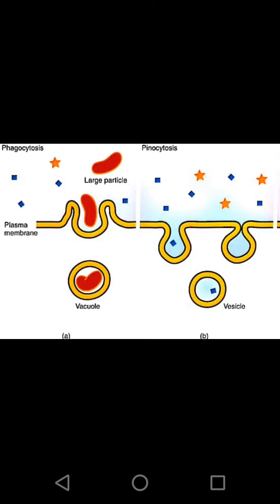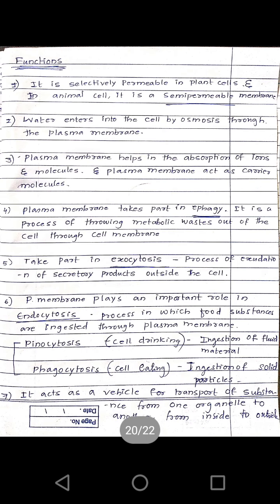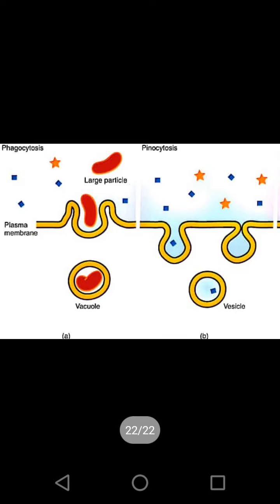In phagocytosis, ingestion of solid material takes place — it is called phagocytosis, also known as cell-eating. Pinocytosis is the process of drinking a fluid — a fluid material is ingested by the plasma membrane — and is therefore called pinocytosis, also known as cell-drinking.